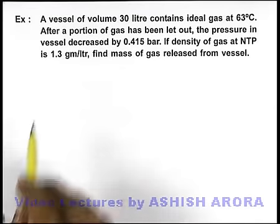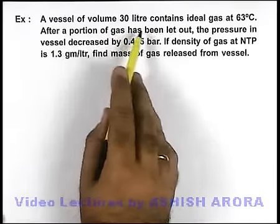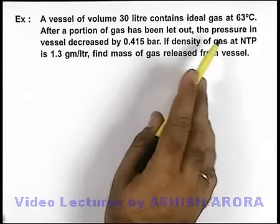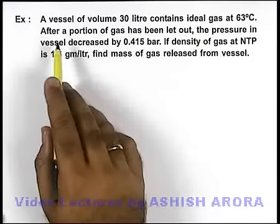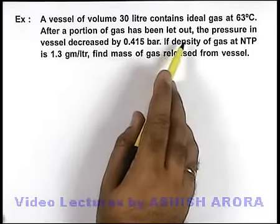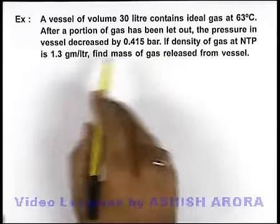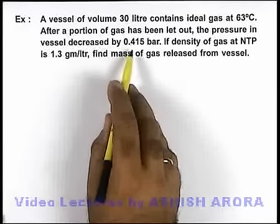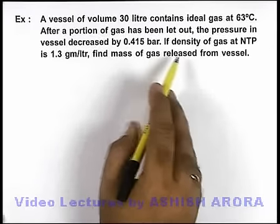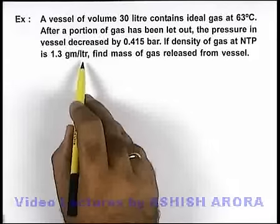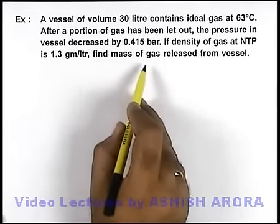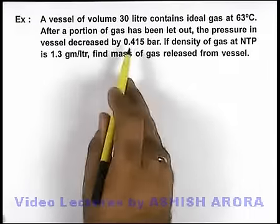In this example, we are given that a vessel of volume 30 liter contains an ideal gas at 63 degree centigrade. After a portion of gas has been let out, the pressure in vessel decreased by 0.415 bar. If density of gas at NTP is 1.3 gram per liter, we are required to find the mass of gas released from the vessel.